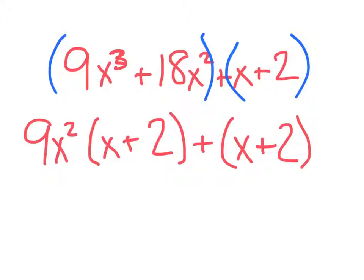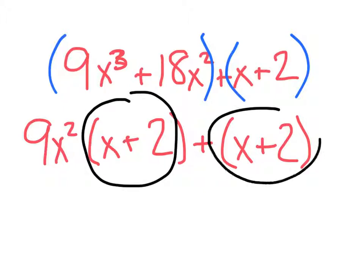So, the question becomes, how do I write my answer out? I see that these are the same, which is perfect. So I'm going to go ahead and bring those down: x + 2.